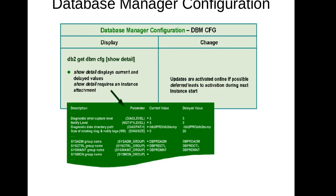First on the list is the database manager configuration. We can call an instance a database manager or DBM. To list the configuration parameters related to the instance, we have the command `db2 get dbmcfg`. This command lists all parameters related to the instance. For example, some of these parameters include the diag level, the notification level, diag path, and tag size. These kinds of parameters are related to the database manager configuration.